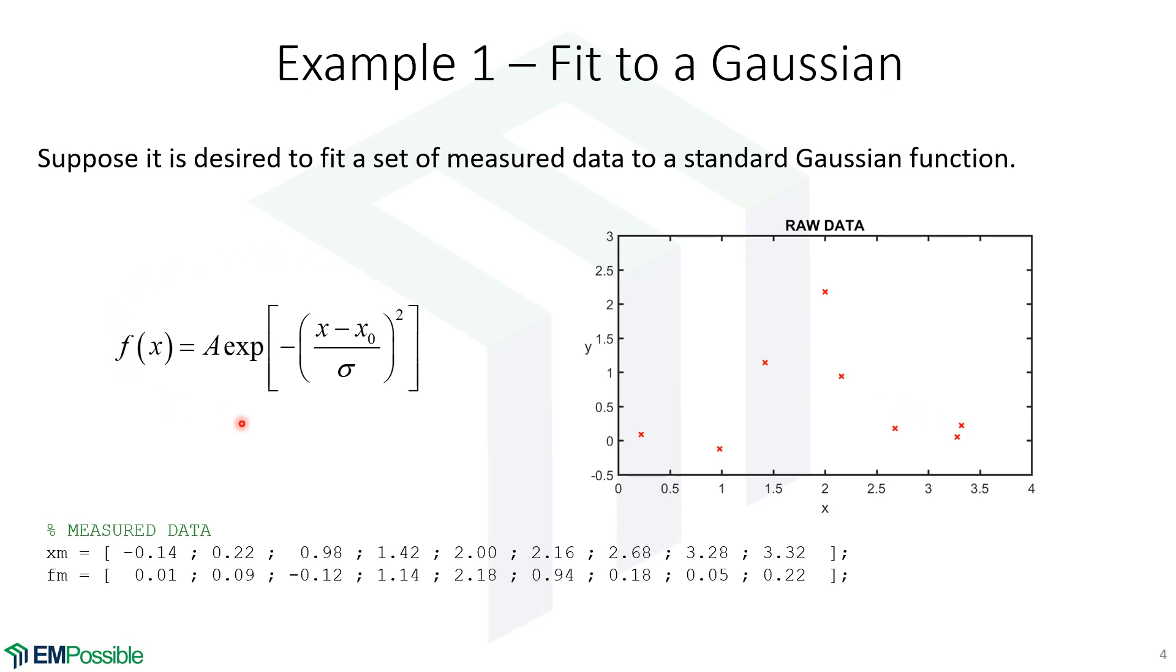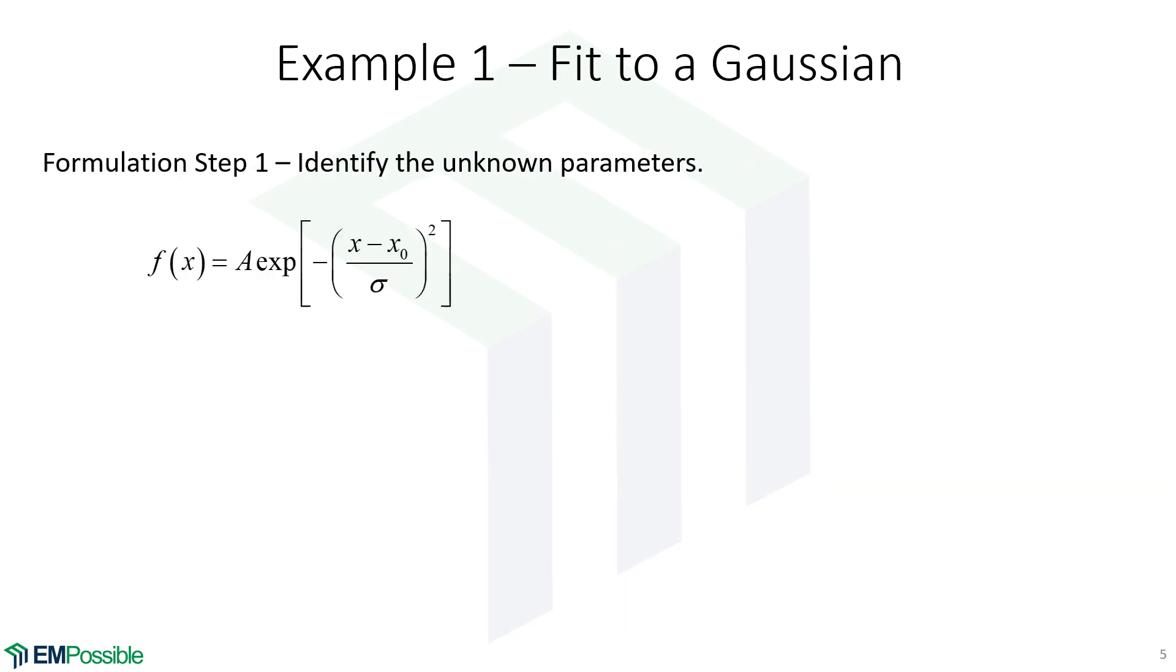But we want to fit it to this Gaussian. So we have some kind of amplitude, we have some kind of offset of where the Gaussian, where the center of the Gaussian is, and we have the width of the Gaussian. In this case, it's A, the amplitude, X0, the offset, and sigma, the width of our Gaussian.